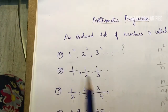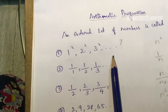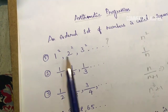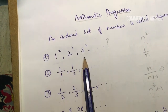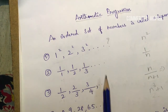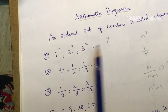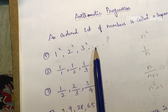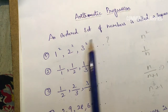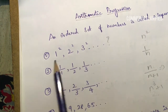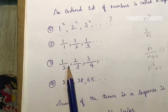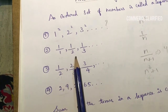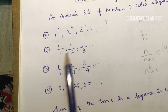In this sequence, we know how to identify the first three terms and how to identify the fourth term. For example: 1 squared, 2 squared, 3 squared — this is 4 squared. This is of the order n squared. Second example: 1 by 1, 1 by 2, 1 by 3, then 1 by n.